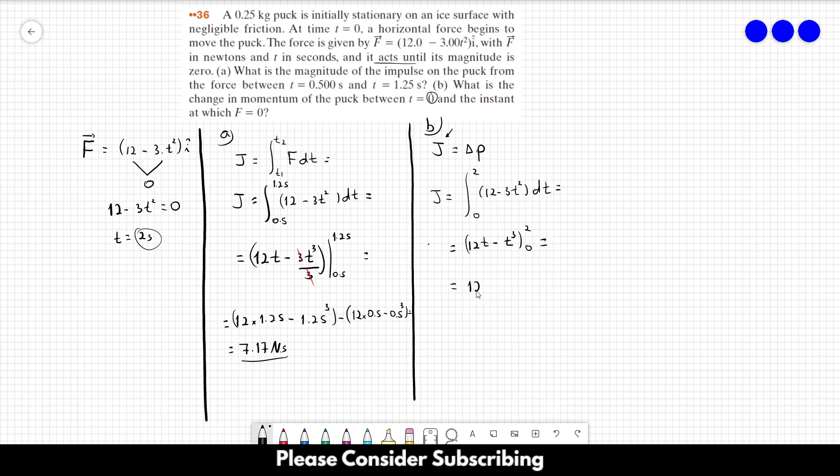This is equal to 12 times 2 minus 2 to the power of 3 minus 0. So this is just 24 minus 8, which is 16 kilograms meters per second. That's the answer of letter b.